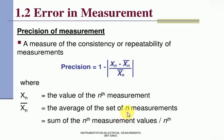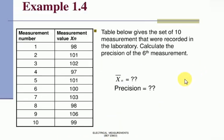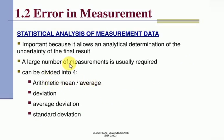Error in measurement statistically. If we have statistical analysis of measurement data, that is important because it allows an analytic determination of the uncertainty of the final result. A large number of measurements is usually required. Statistical analysis of measurement data is divided into four: arithmetic mean, deviation, average deviation, and standard deviation.